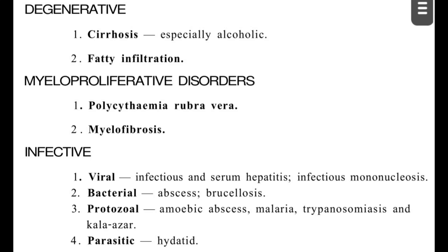Next are degenerative processes, which are of two types: cirrhosis and fatty liver infiltration. In alcoholic cirrhosis, very common in Western countries, the liver remains enlarged from early to late stages. In hepatitis B and C cirrhosis, common in Asian populations, the liver shrinks at a later stage. For fatty liver infiltration, fatty deposition causes liver enlargement, and clinical correlation with lipid profile is important.